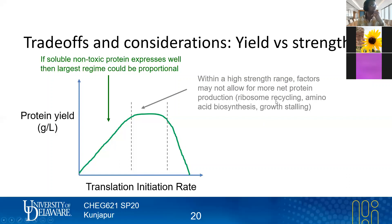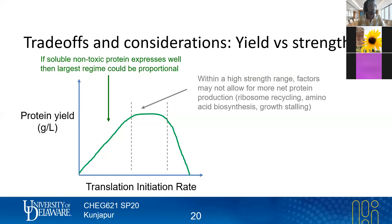If you have a limitation in ribosome recycling, you might have a stronger initiation rate, but there are simply not more free 30S subunits ready to find your RNA. You could have run out of a particular amino acid. The cell is going to try to compensate with all the regulation we've seen and drive more flux into those pathways, but that costs more energy, and the cell may essentially double at a slower rate.